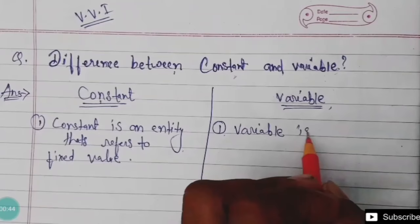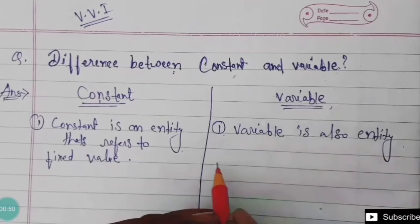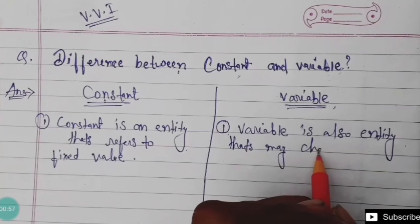Variable is also an entity, but it can change. A constant's value doesn't change, while a variable's value may change.